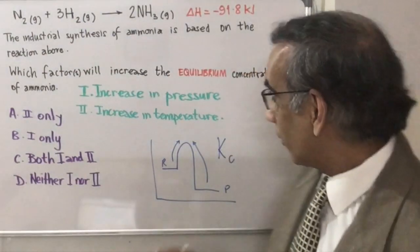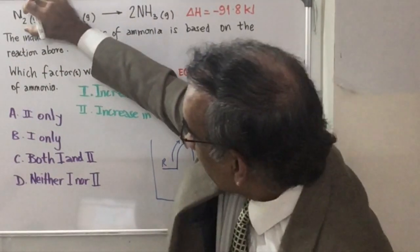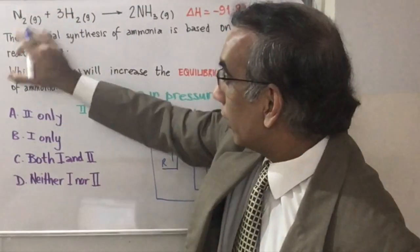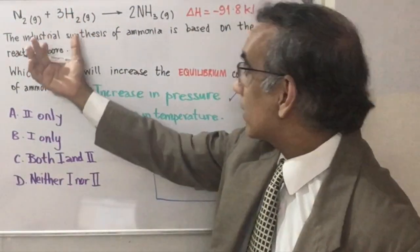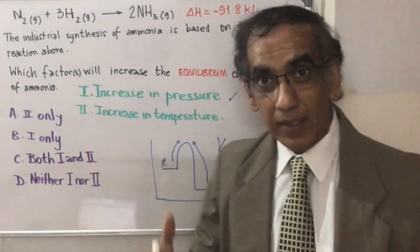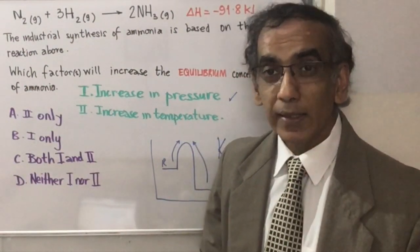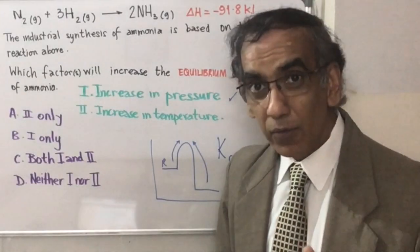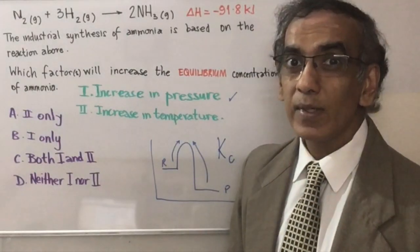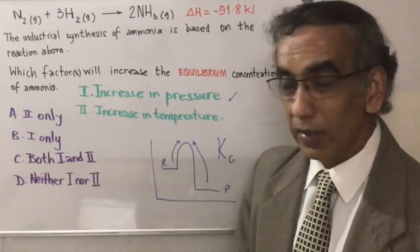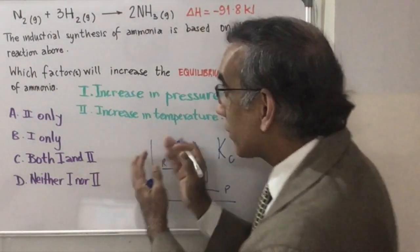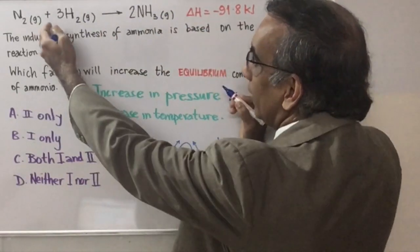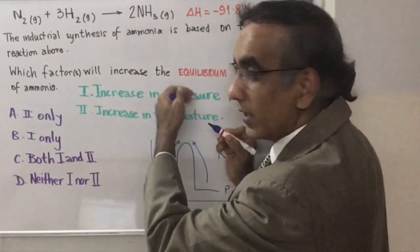You might think that when you increase the pressure, equilibrium would be shifted from where you have more moles of reactants to where you have less, in keeping with Le Châtelier's principle. And it does do that. But that increase in pressure amounts to a simple increase in concentration. When the pressure is increased, it's going to shift the equilibrium towards the products side.